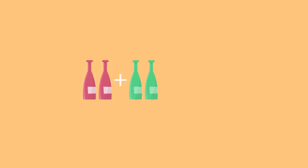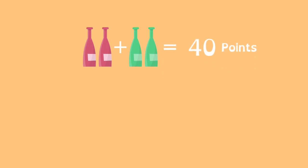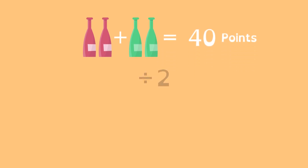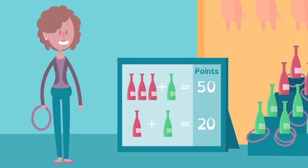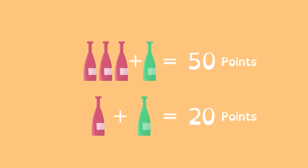If 2 red and 2 green are 40 points, then Kate can divide by 2 to find that 1 red and 1 green are 20 points. She's closer to knowing how many points each color is worth, but isn't there yet. She needs to work with the other equation.